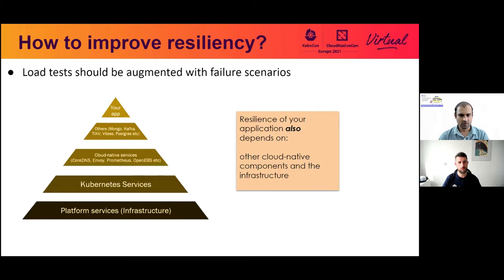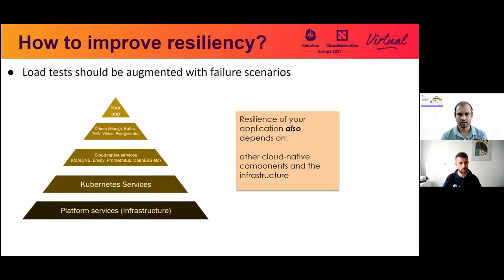If you look at this pyramid, for a typical application deployed on Kubernetes, you have the platform services — cloud or on-premise — then Kubernetes itself, then a host of microservices from the cloud-native ecosystem such as service discovery, storage, and observability, and then your application stack. There can be so many things that fail. It's important to recognize what's happening when these components undergo failures. Failure testing — in other words, chaos injection — is really important.